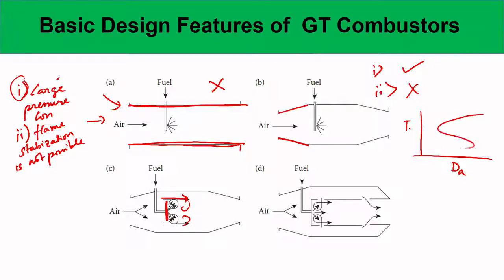This connects to the Damköhler number concept — the T versus Damköhler number S-curve from the limit phenomena. Ignition cannot be sustained below a certain Damköhler number; the flow time scale must be definitely larger than the chemical time scale. This flow reversal mechanism, achieved by a bluff body or swirler, is critical for flame stabilization. It leads to some pressure loss, but that is unavoidable.